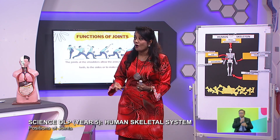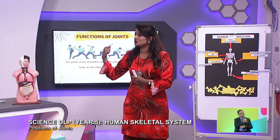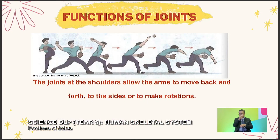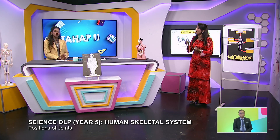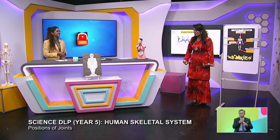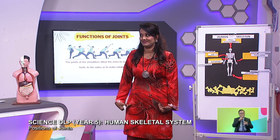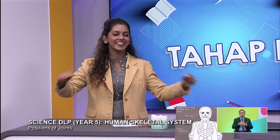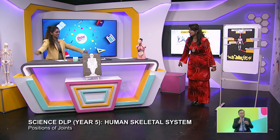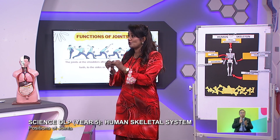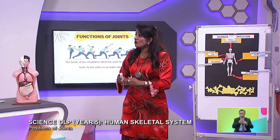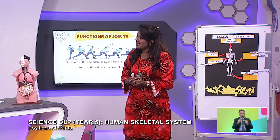If you see people playing handball, rugby, or badminton, there's a joint at the shoulder that allows the arms to move back and forth, to the sides, and in rotation. Joints always help us to move, not only bones. If there are no joints — only bones — how are you going to sit? You would be like a robot, you cannot bend your body. That's the importance of joints — bones and joints must come together as a package.